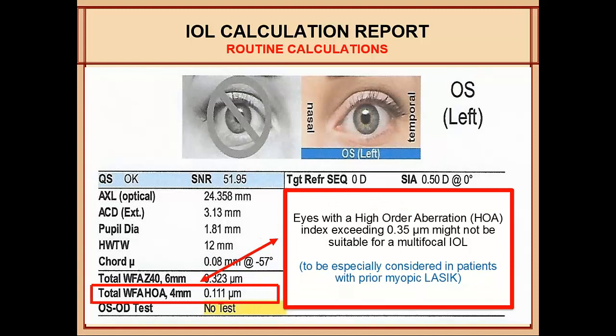Eyes with a high-order aberration index exceeding 0.35 micrometers might not be suitable for a multifocal IOL. I was burned on a case like this long ago and had to replace the implant before I even knew about high-order aberrations. This is especially common in patients who had prior myopic LASIK with older techniques, where we see more high-order aberrations than with newer LASIK.